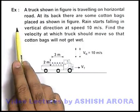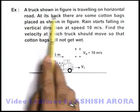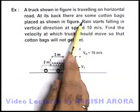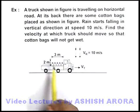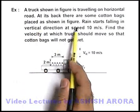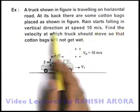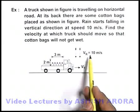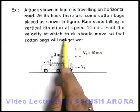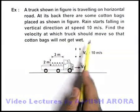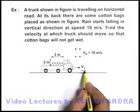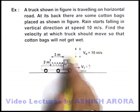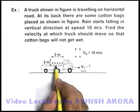In this example, we are given that a truck shown in the figure is travelling on a horizontal road. At its back there are some cotton bags placed as shown. Rain starts falling in the vertical direction at a speed of 10 meters per second, and we are required to find the velocity at which the truck should move such that the cotton bags will not get wet.